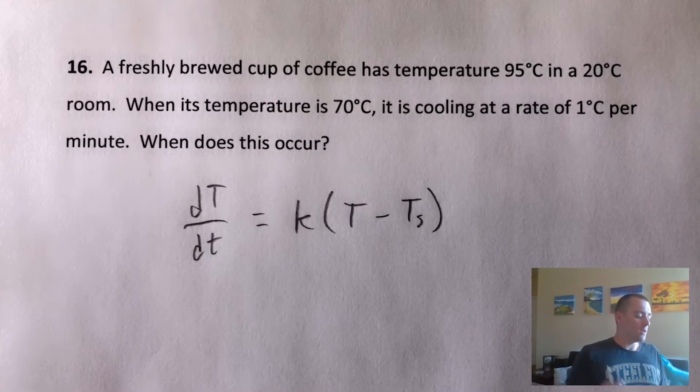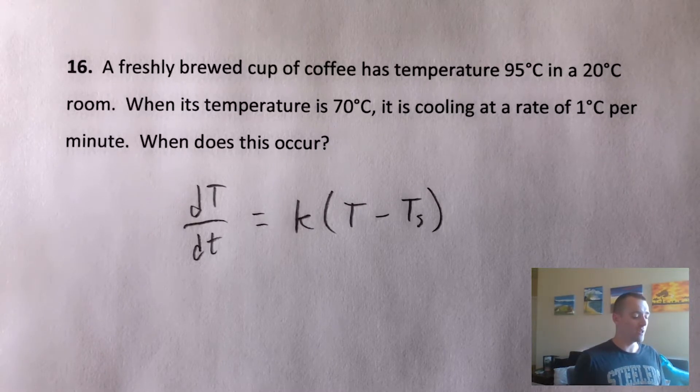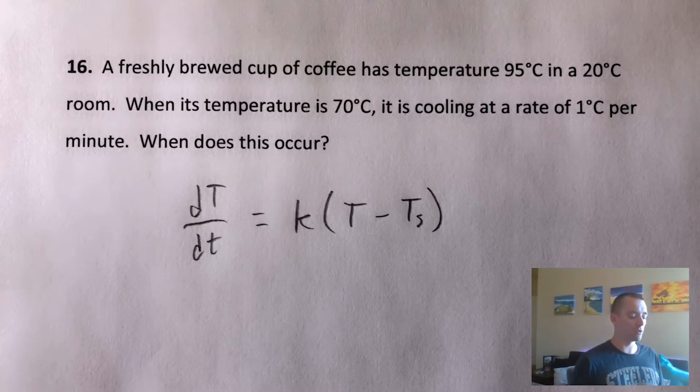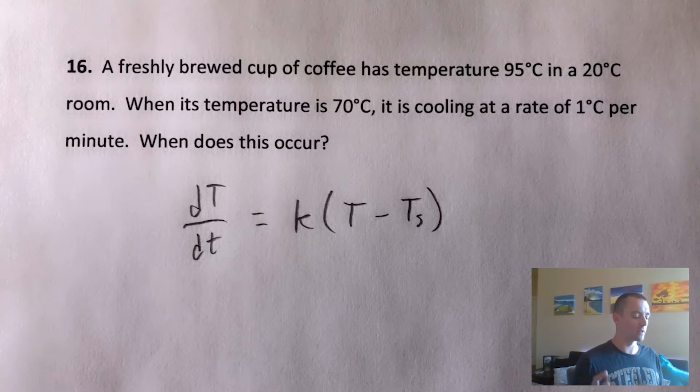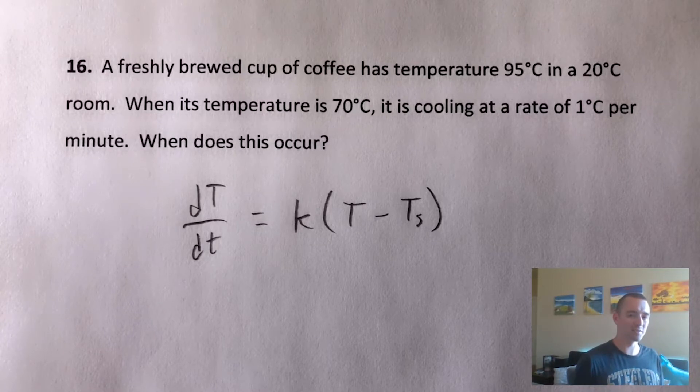So without further ado, let's jump right into this problem. A freshly brewed cup of coffee has temperature 95°C in a 20°C room. When its temperature is 70°C, it is cooling at a rate of 1°C per minute. When does this occur?